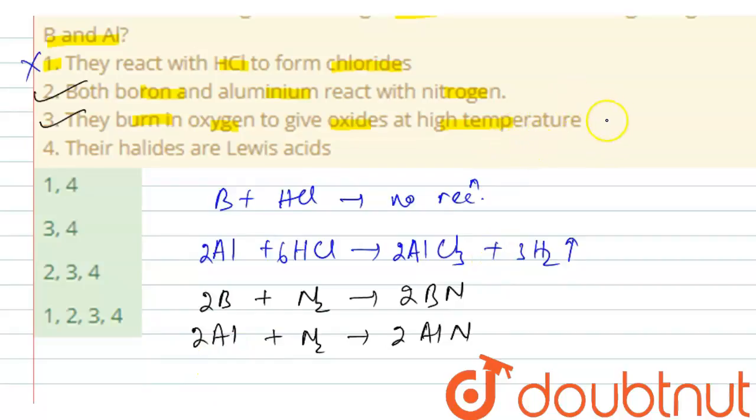Boron forms B2O3 and aluminium forms Al2O3. So 4B + 3O2 → 2B2O3.